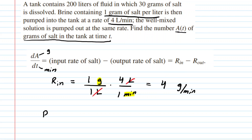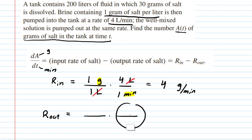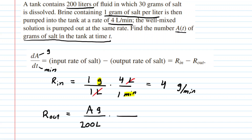We'll turn next to the output rate — a very similar process. We're going to multiply a concentration by the output rate coming out of the tank. The concentration is a little tricky because at any given time the tank has a variable number of grams of salt. We say A grams of salt divided by the total volume of the tank, which is 200 liters. The mixture is pumped out at the same rate, so we multiply by four liters per minute.